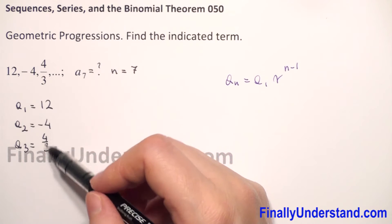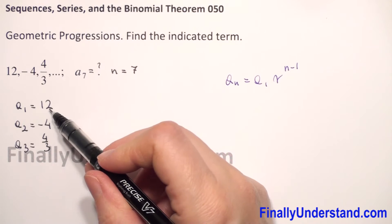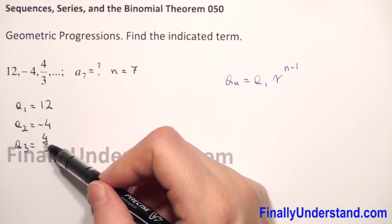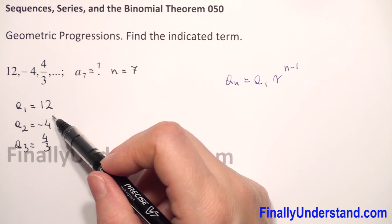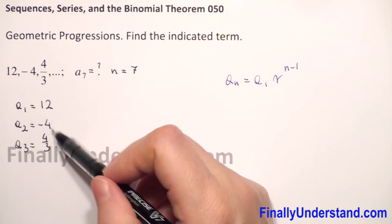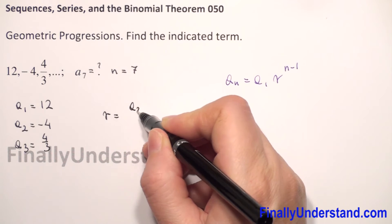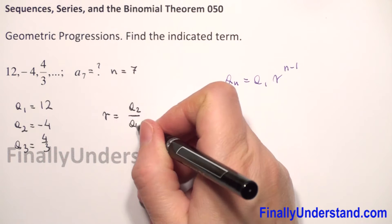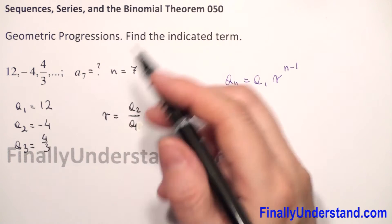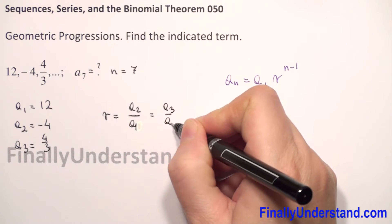Why? Because to get the terms of a geometric progression we multiply every term by this constant number to get the next. So to find this constant number we use division. So r is equal to a2 over a1.